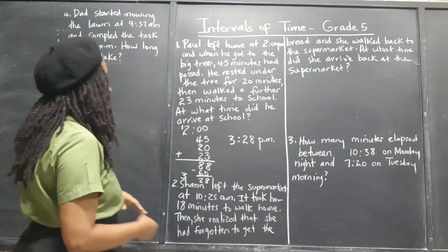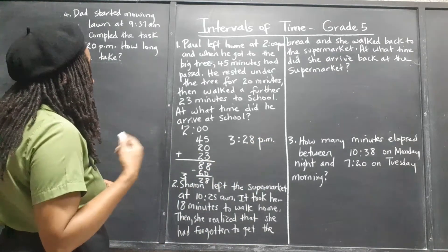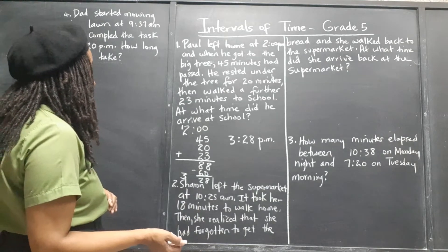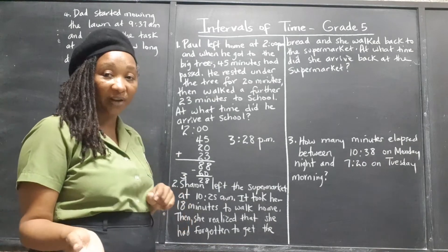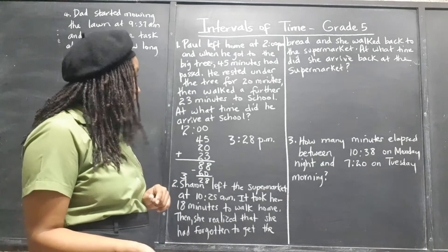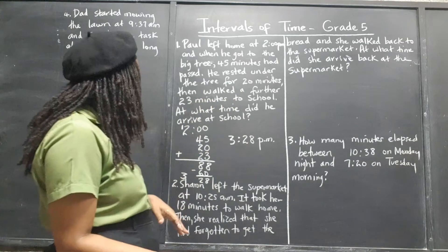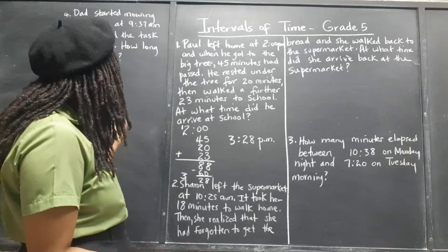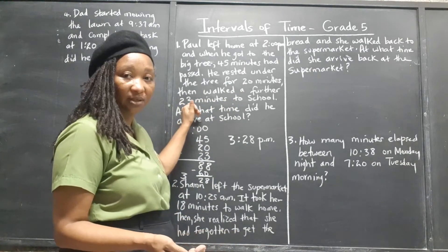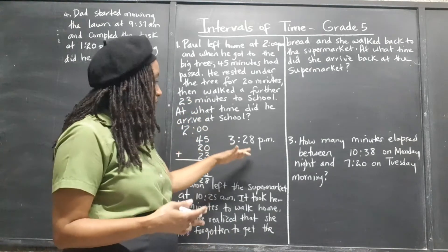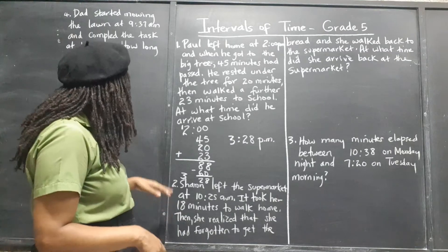So it's 3:28 PM. He left home at 2 PM; the 45 minutes brings it to 2:45, or quarter to 3. The 20 minutes would be 5 past 3. And then the extra 23 minutes of walking, that's 28 past 3 — 3:28 PM.